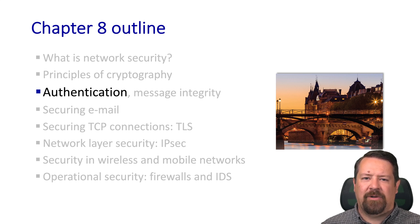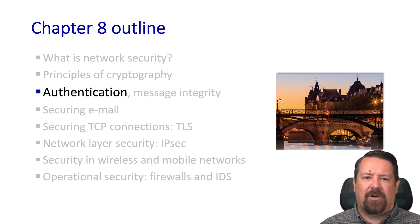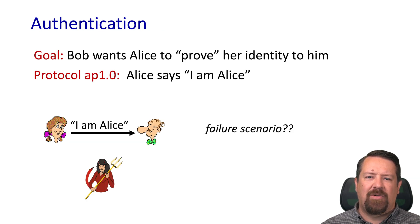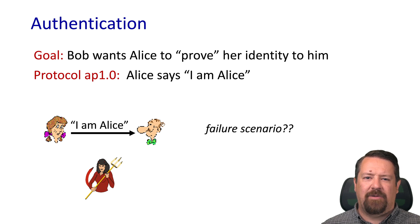Spoiler alert: we can't actually have authentication reliably without message integrity. So we'll talk about those two network security goals today. We have Bob and Alice — Bob wants to know who's talking to him, and Alice says, 'I am Alice.'